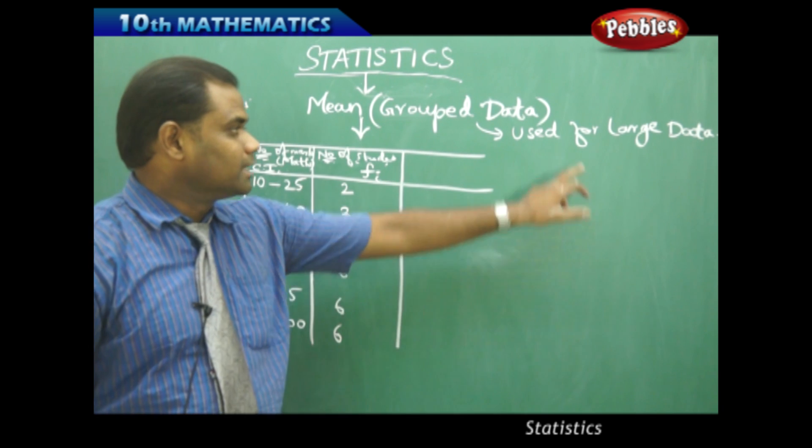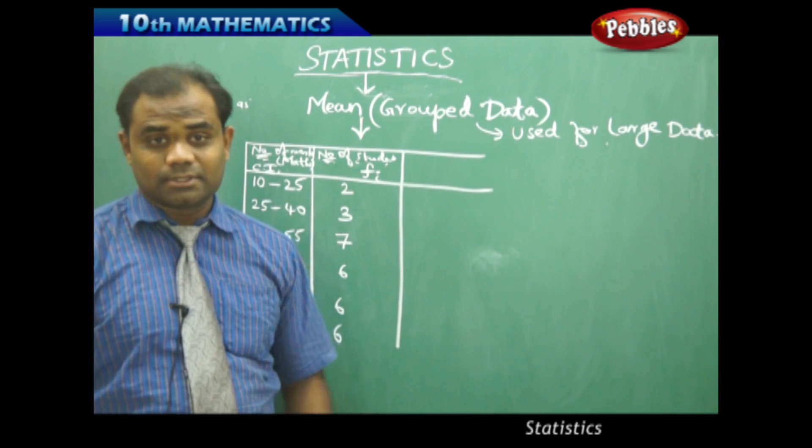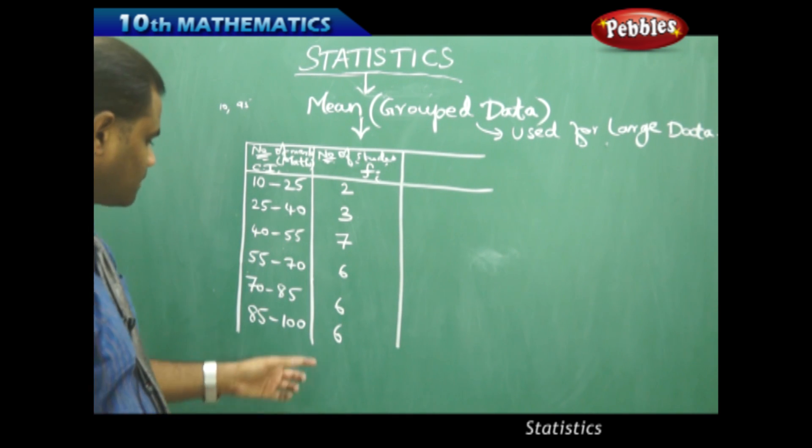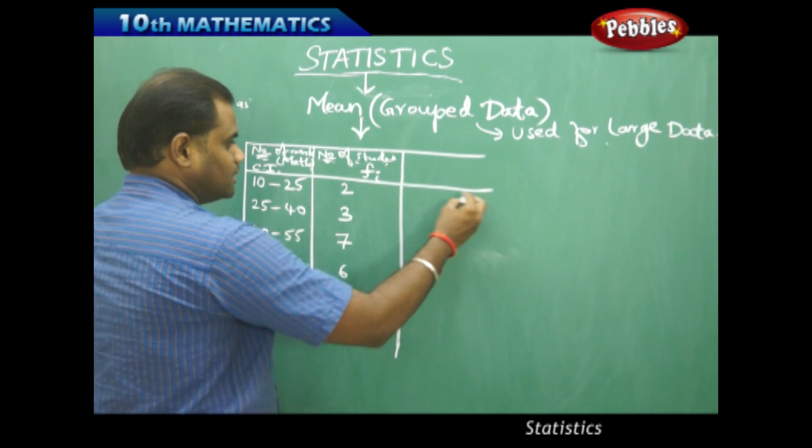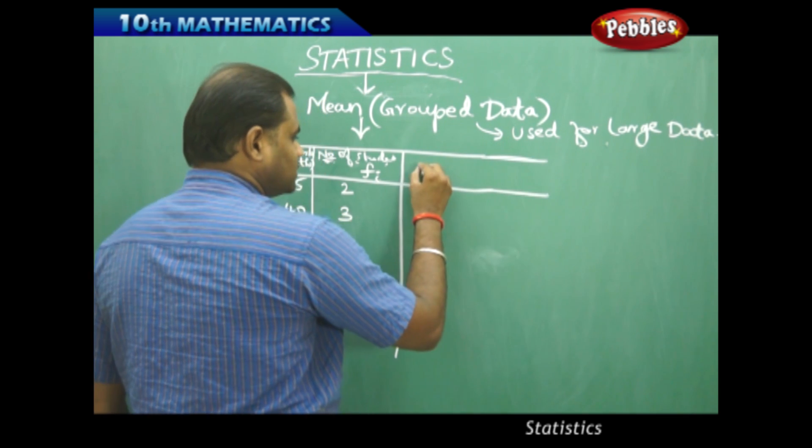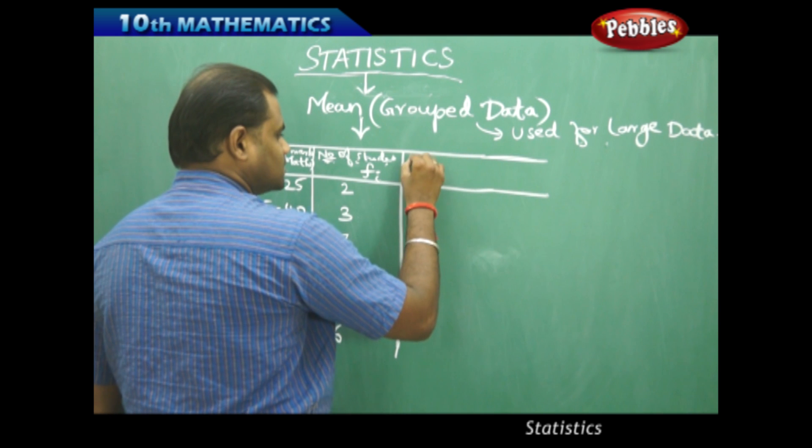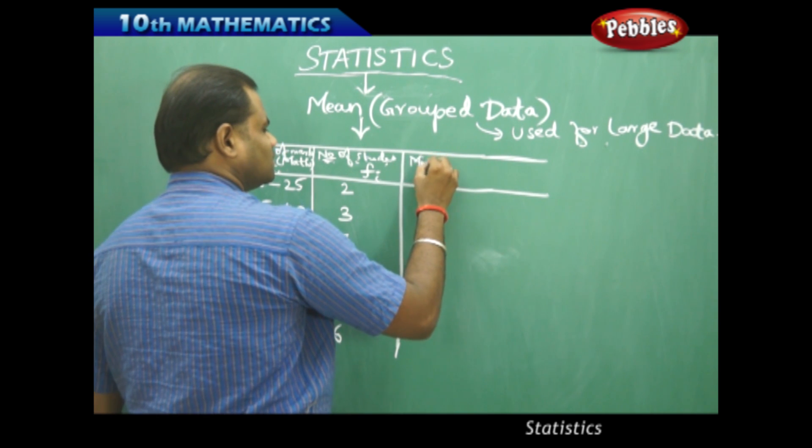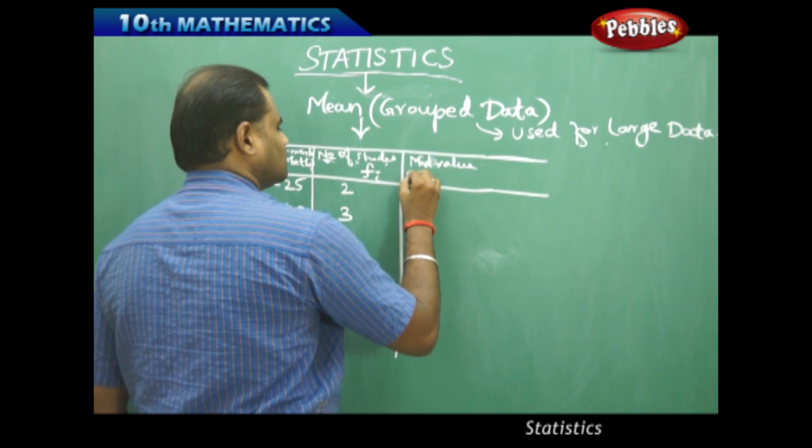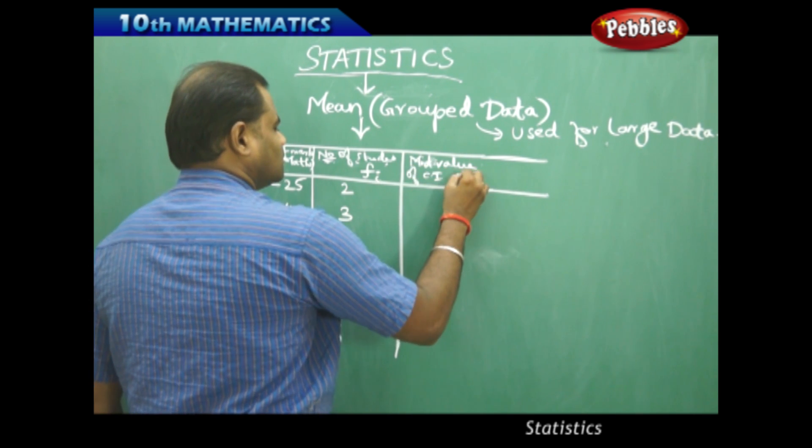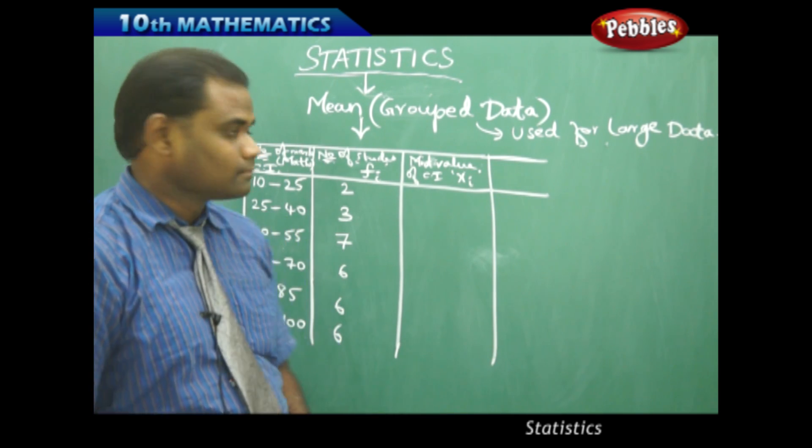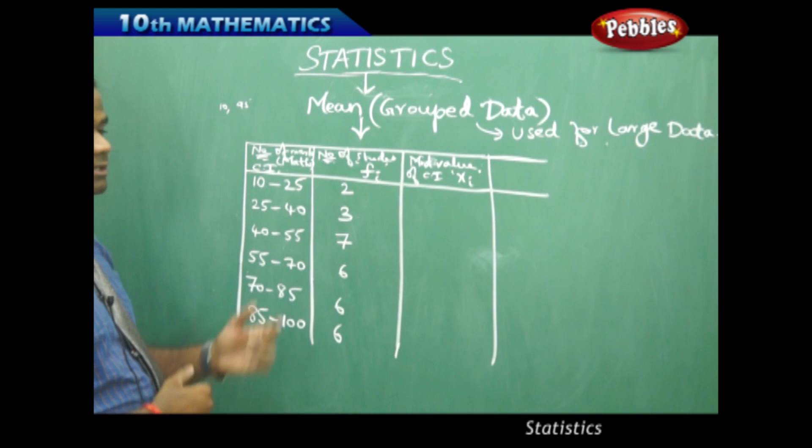So for large data the grouped data helps in calculating the measures of central tendency: mean, median and mode. So to start with let's take xi. As we have seen that xi here is the mid value of the class interval. My xi is the mid value of the class interval.